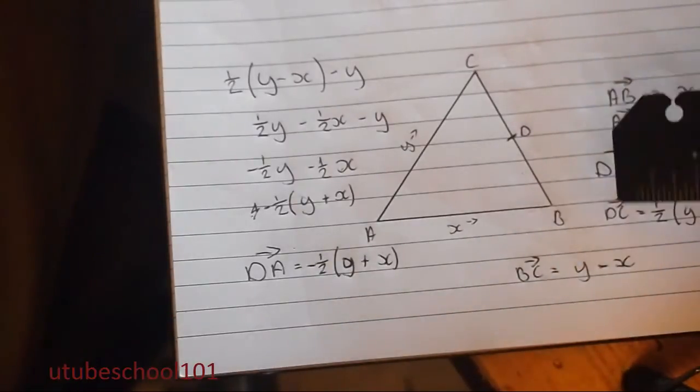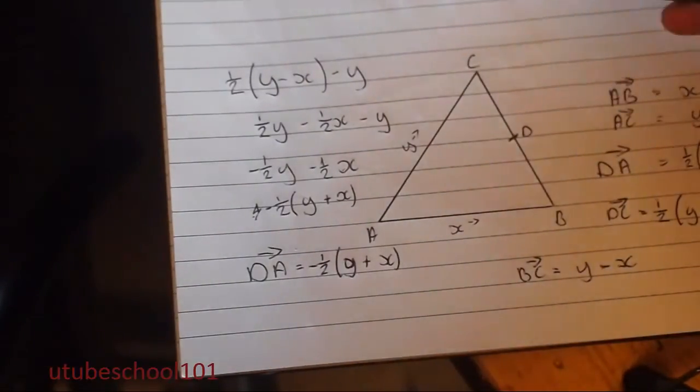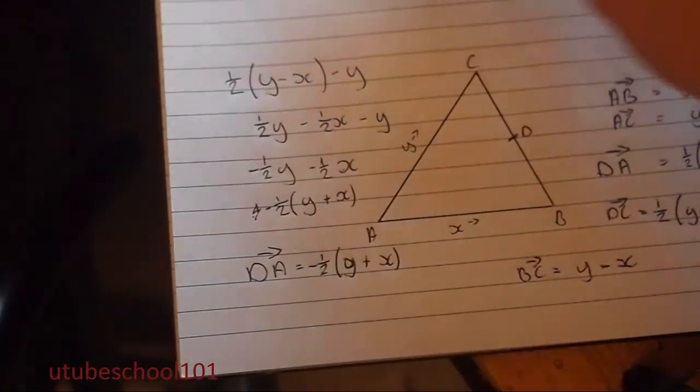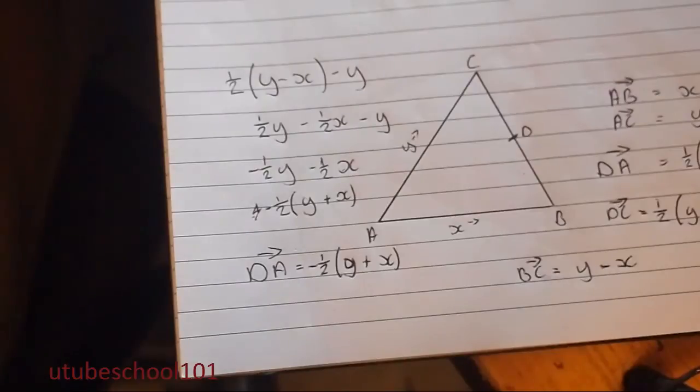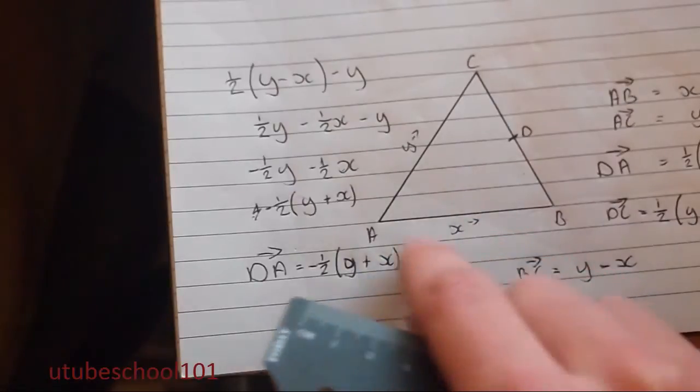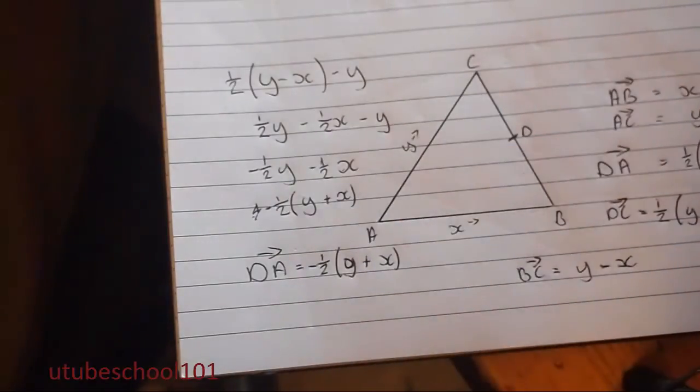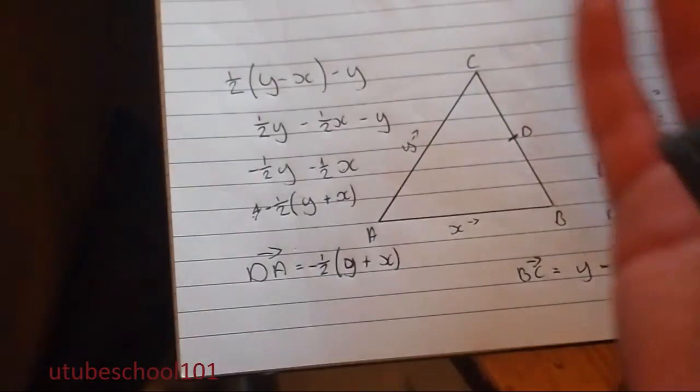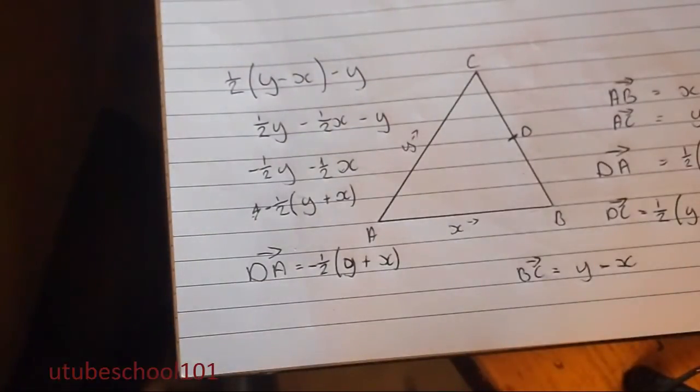So essentially, when you're finding vectors, you can basically go anywhere. Like you could go along here, along here, and still end up at the same place. Because they all add up and take away from each other. It's like you can go... Say you had the vector or algebraic expression of the vector X minus X. And that would cancel each other out and you'd be going nowhere.